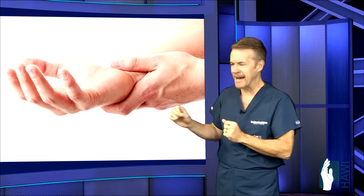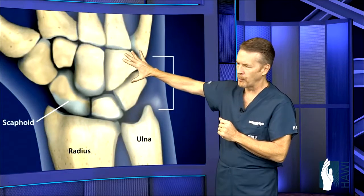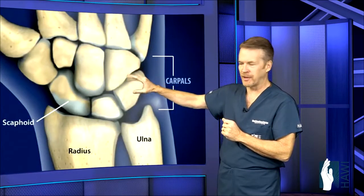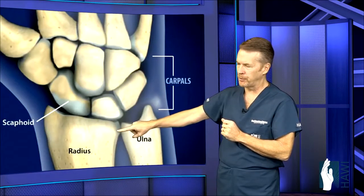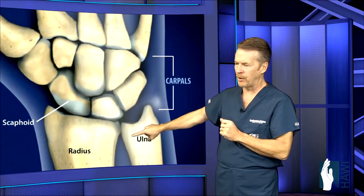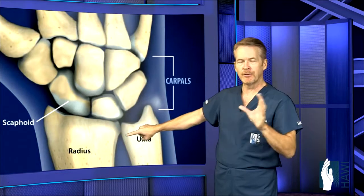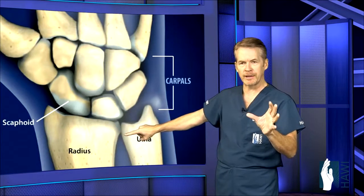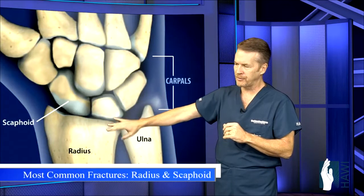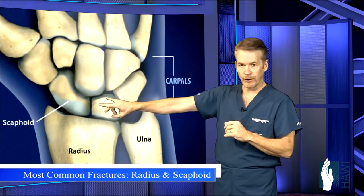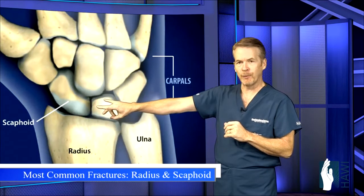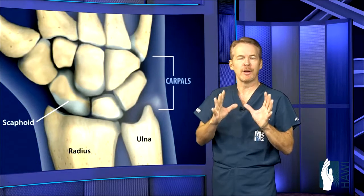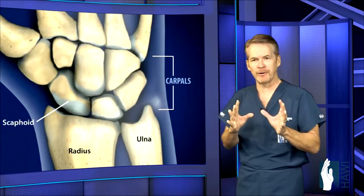Let's look at the anatomy of the wrist. These are the carpal bones — there are eight bones that sit on top of the two forearm bones, the radius and the ulna. The most common fractures in the wrist involve the radius first and the scaphoid second. These are the two most common bones we're going to concentrate on.